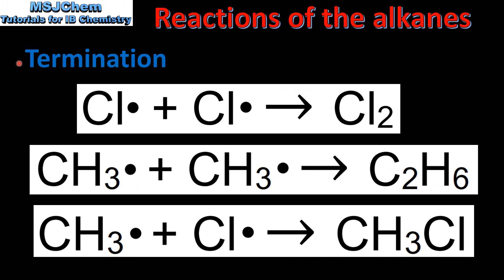The final step is termination. In the termination step the free radicals pair up their electrons to form molecules. In the first step two chlorine radicals react together to form chlorine. In the second step two methyl radicals react together to form ethane. And in the final step a methyl radical and a chlorine radical react together to form chloroethane.